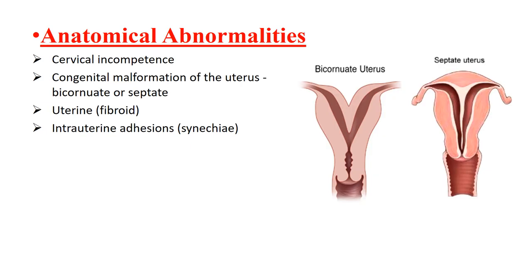The next factor is anatomical abnormalities, which are related to second trimester abortion. Cervical incompetence is one of the common causes of mid-trimester and recurrent abortion. Congenital malformation of the uterus in the form of bicornuate or septate uterus is responsible for second trimester abortion, with causes including reduced intrauterine volume, reduced expansile property of the uterus, and reduced placental vascularity when implanted on the septum. Uterine fibroids are responsible for infertility and abortion due to distortion or partial obliteration of the uterine cavity. Intrauterine adhesion or synechiae interfere with implantation, placentation, and fetal growth.